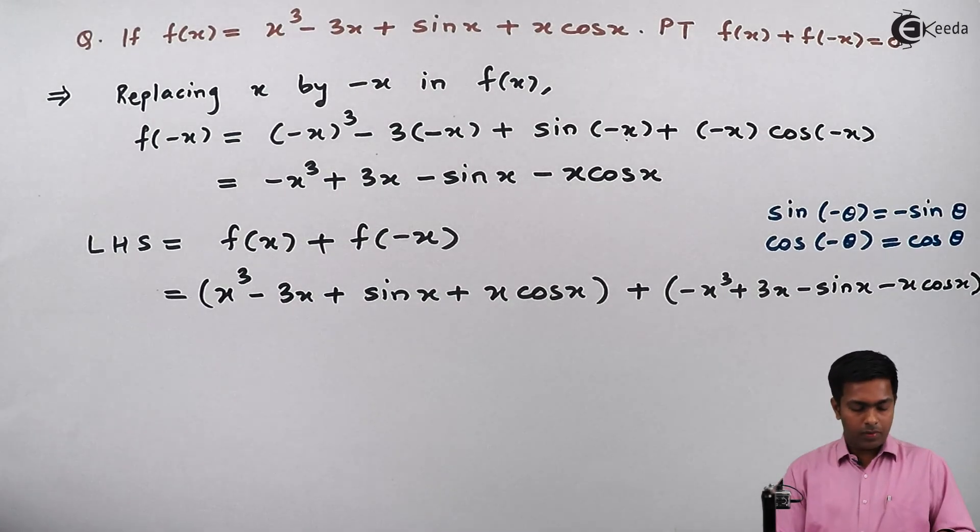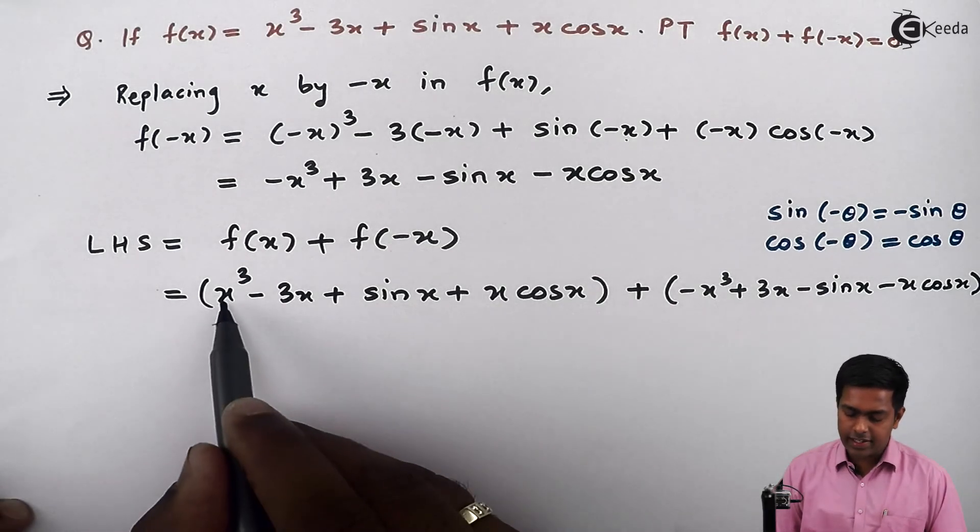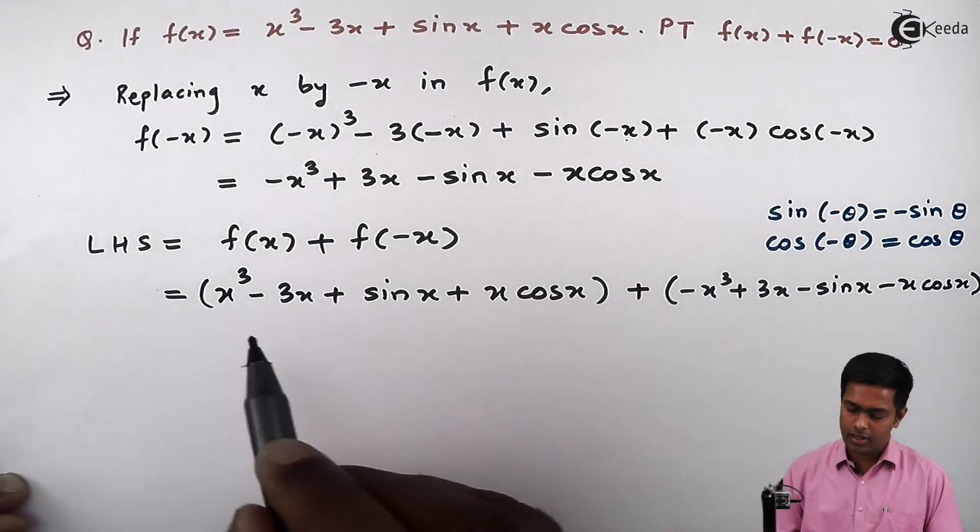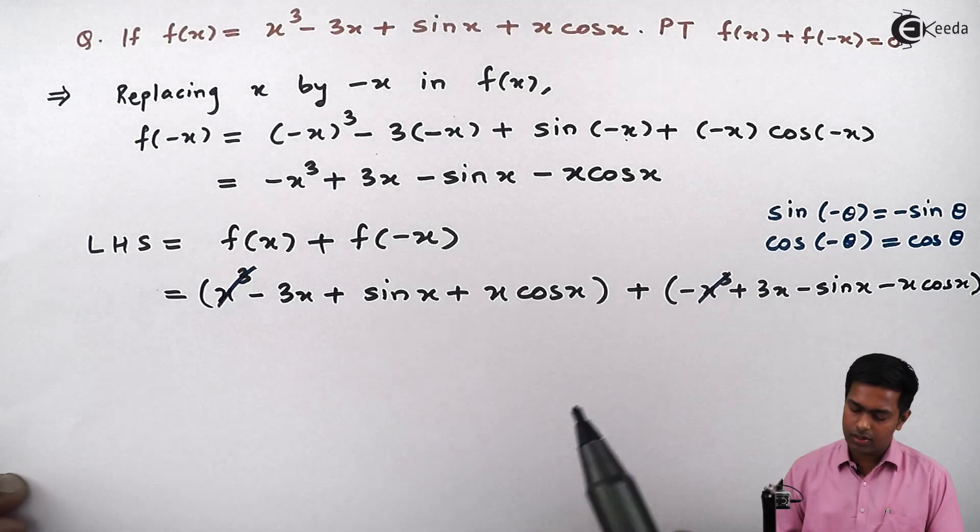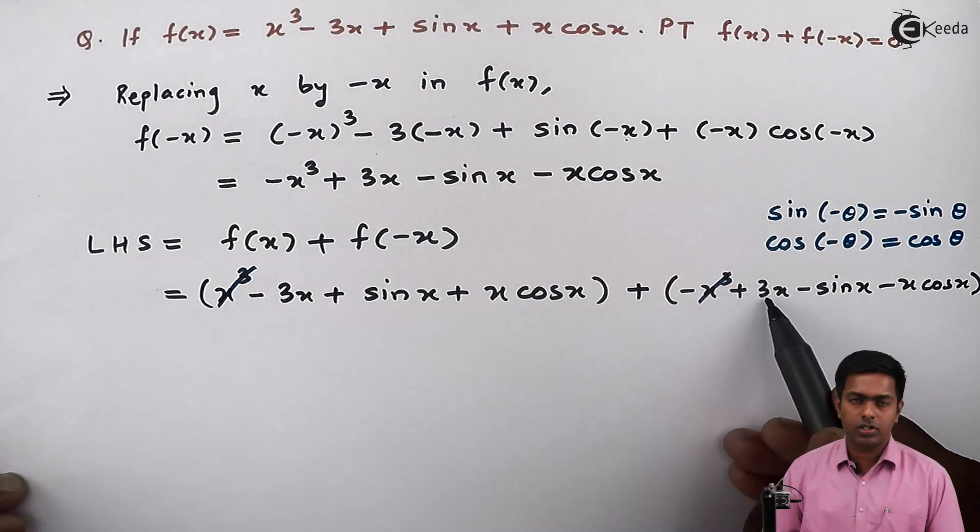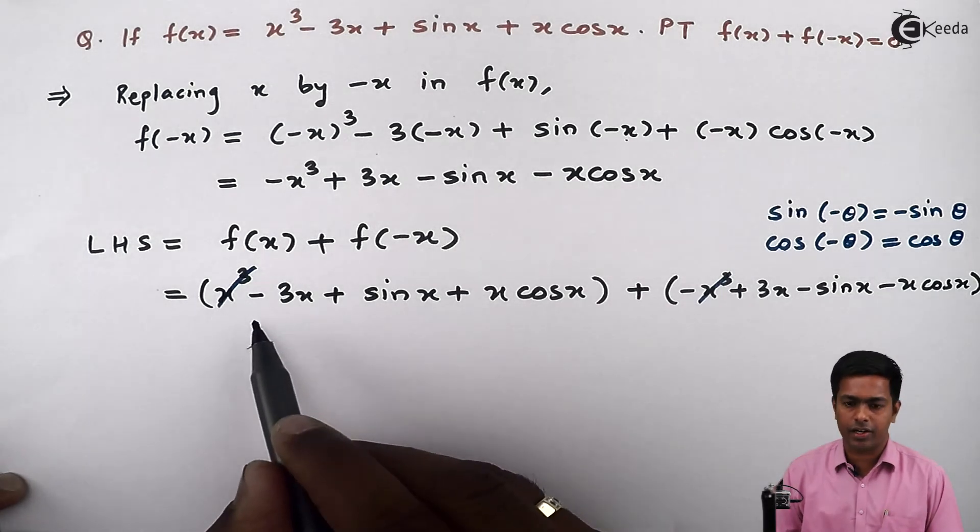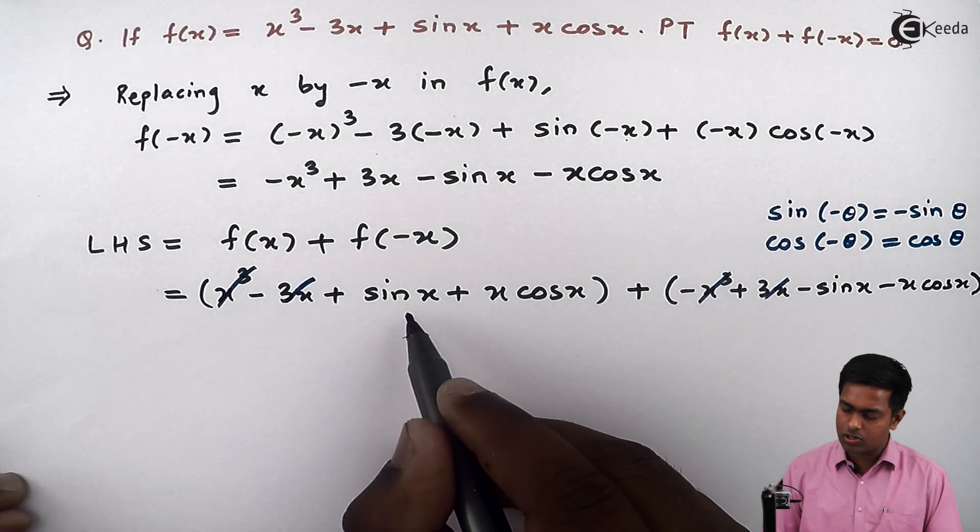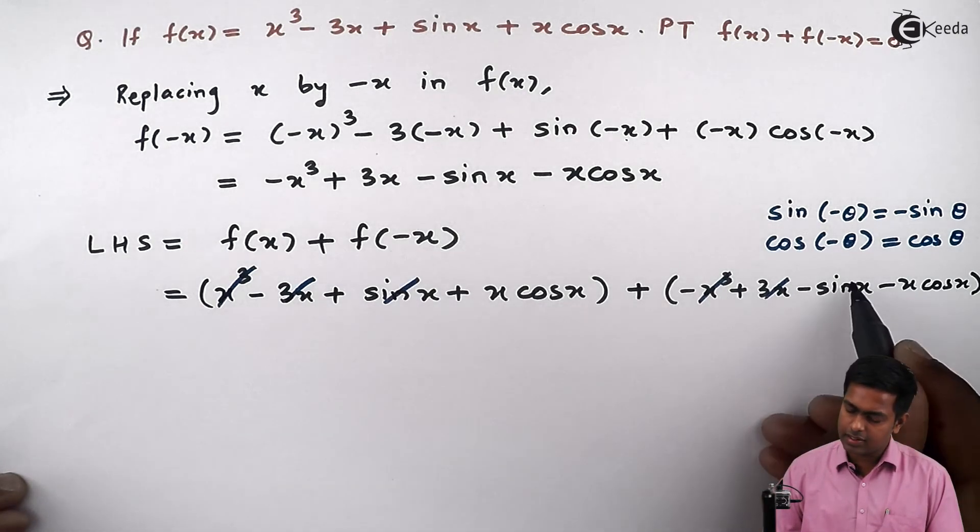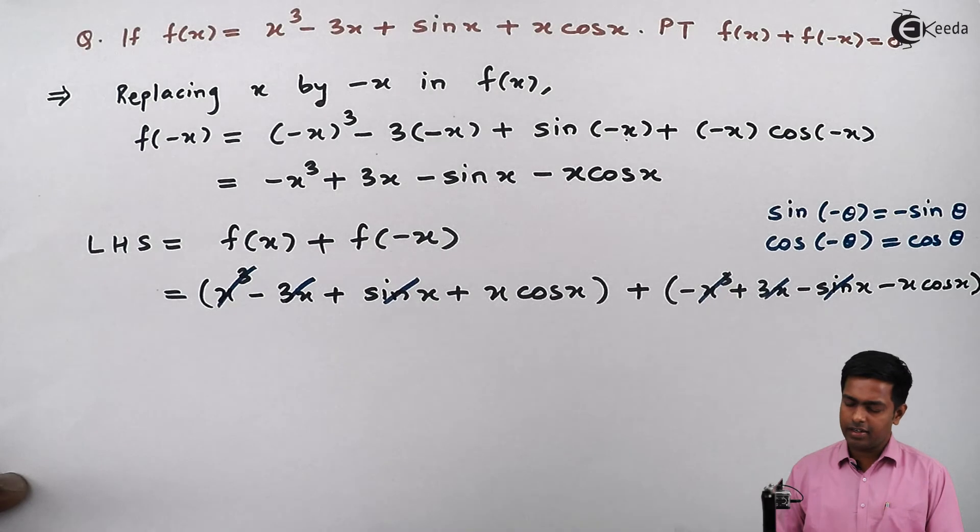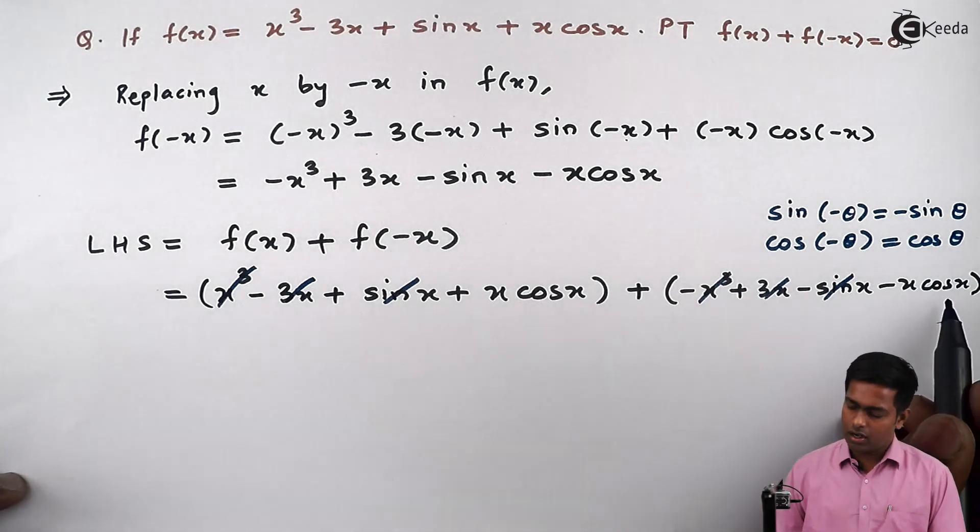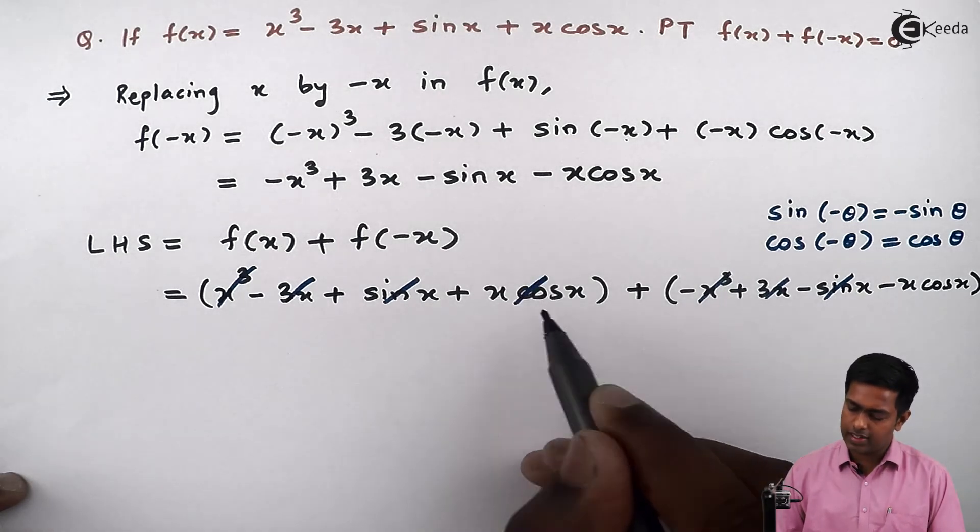Now if you will observe, then this x³ is having positive sign and this x³ is having negative sign, hence we can cancel it out. Similarly, 3x is positive whereas this 3x is negative, will cancel that also. This sin x is positive, it is negative, sin x will be cancelled. And in the end, x cos x and x cos x are again opposite in sign, so we will cancel it out.